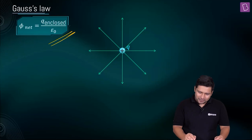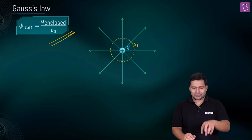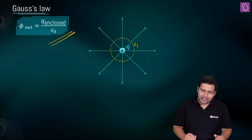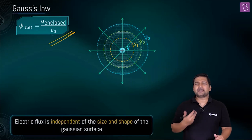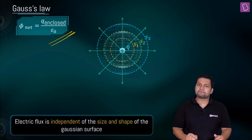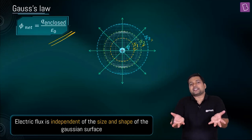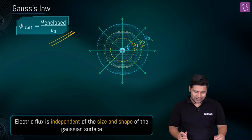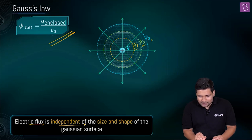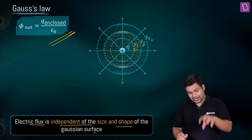If there is a plus-Q charge and one person has chosen a sphere with surface area S1, somebody else chooses sphere S2, somebody else chooses sphere S3 — for all of them the net flux will be equal to Q by epsilon-naught. Because whatever lines of force are coming out, they will cross through the first sphere, second, third. It has nothing to do with the shape and size of the spheres. So electric flux is independent of the size and shape of the Gaussian surface.